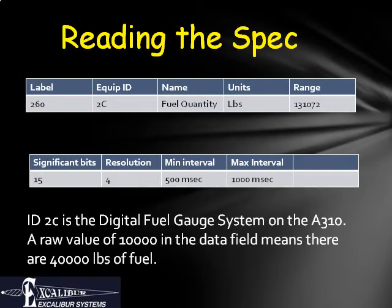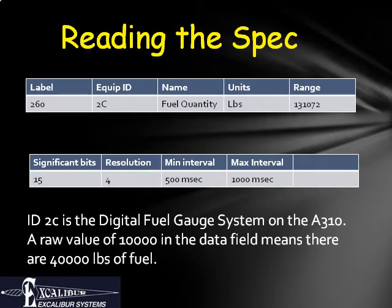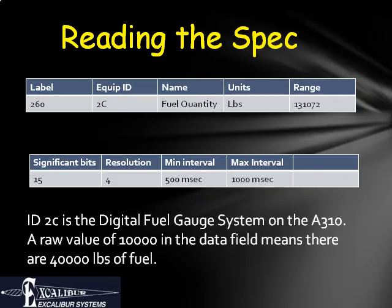The ARINC specification contains lists of tables describing labels. This example describes label 260 when transmitted by a digital fuel gauge system used on the Airbus 310. The label describes how much fuel is currently in the fuel tanks. The maximum amount of fuel that can be measured is 131,072 pounds. 15 data bits are used to convey this data. Since 15 bits provides a range of 0 to 32,767, the value in the data bits must be multiplied by 4 to get the actual number of pounds of fuel. Note that the resolution is a function of the number of bits and the range. This label is expected to be transmitted at least once per second and at most once per half a second.